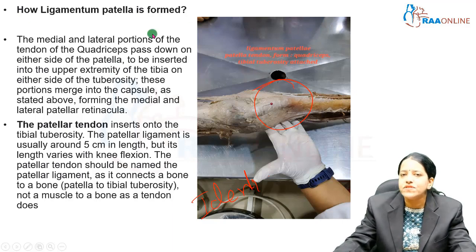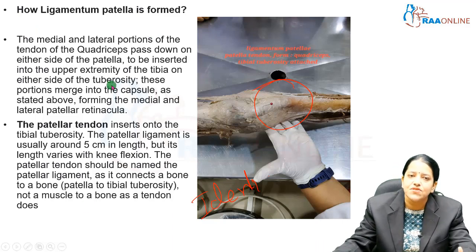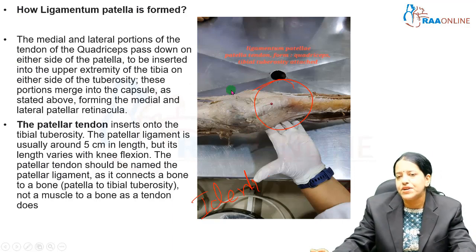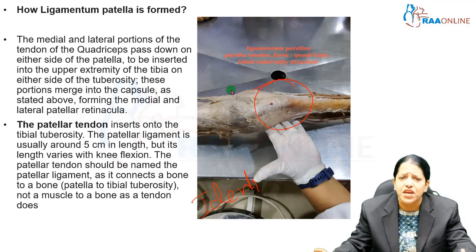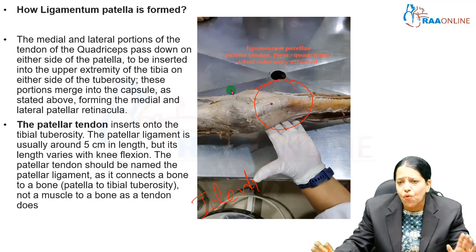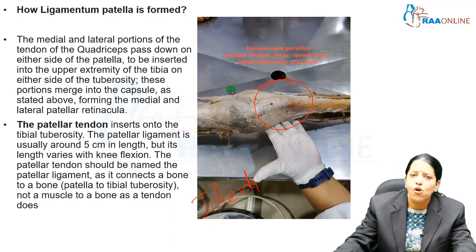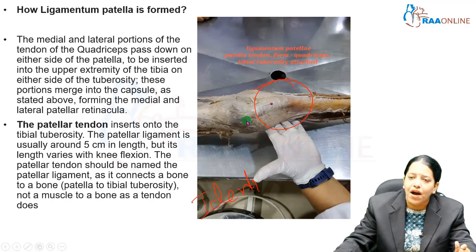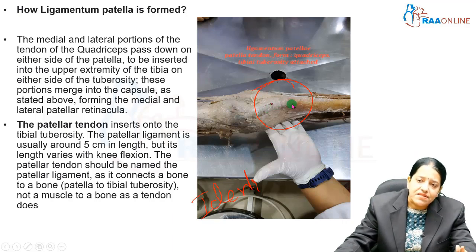The tag question can be asked: how is the patellar ligament formed? The key points are that the medial and lateral portions of the tendon of the quadriceps form it. The muscles of the anterior compartment of the thigh are together called the quadriceps femoris muscle — quadri means four. The four muscles join together and form a common single tendon with a medial and a lateral portion, which comes down and encloses the patella.